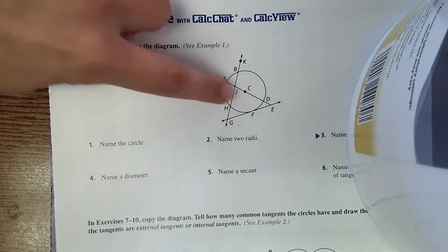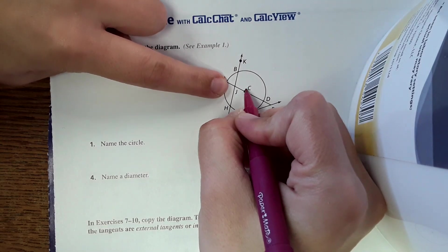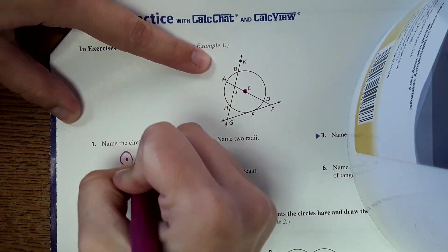So name a circle. This would be the circle. To name it, you name it by the center point, so point C. So this would be circle C.